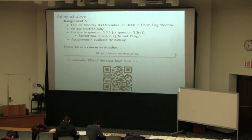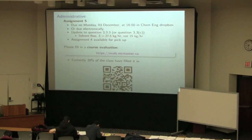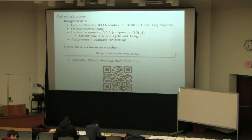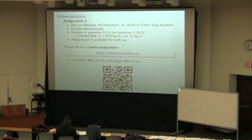The W1 correction is that equation 3.3.3, the solid flow when you're looking at the counter-current system, should be 27.5 kilograms per hour rather than 15 as posted in the earlier version. So if you've downloaded the PDF earlier, please just update it to 27.5.